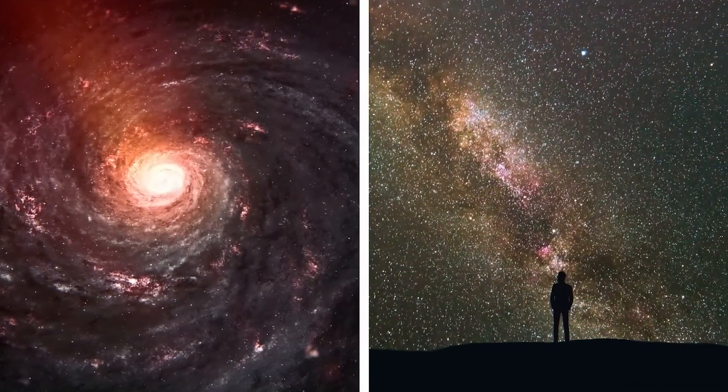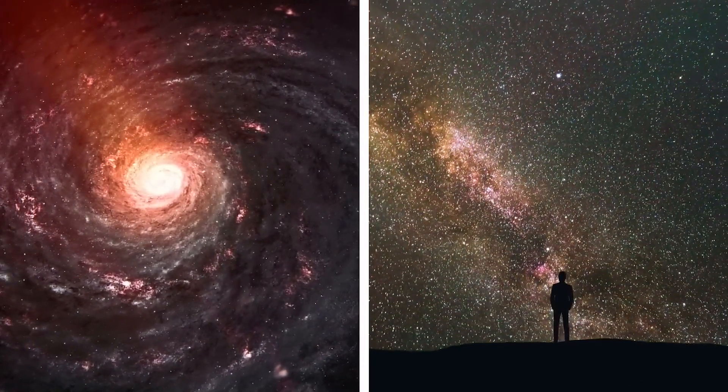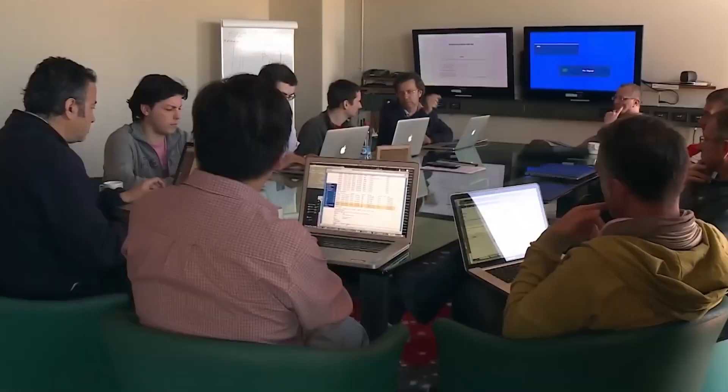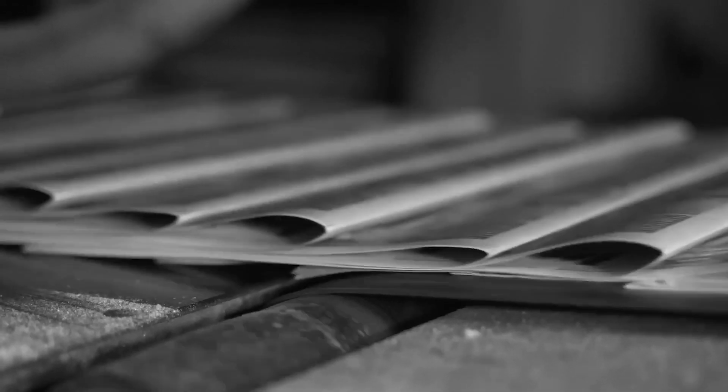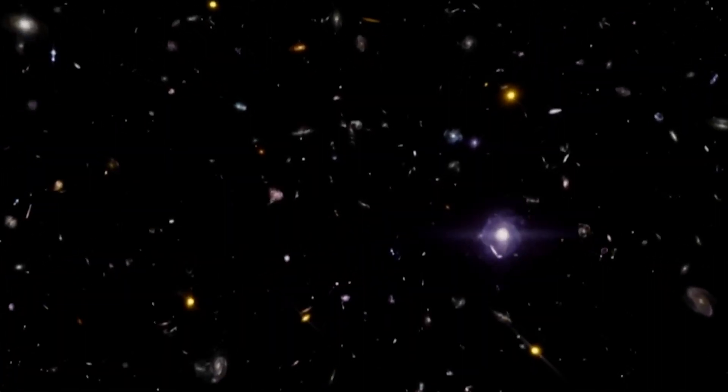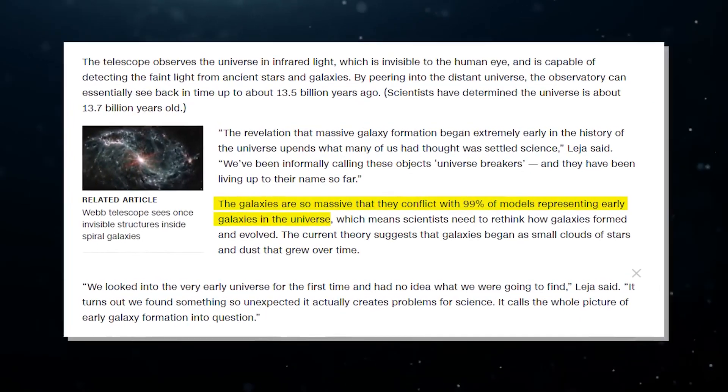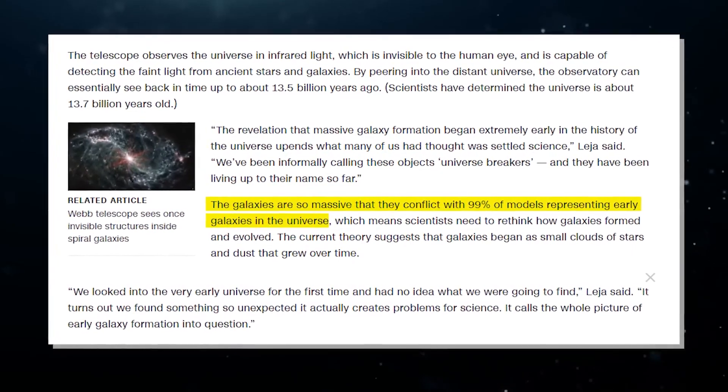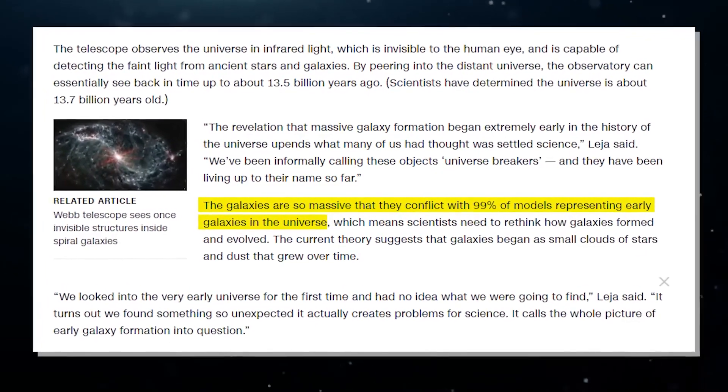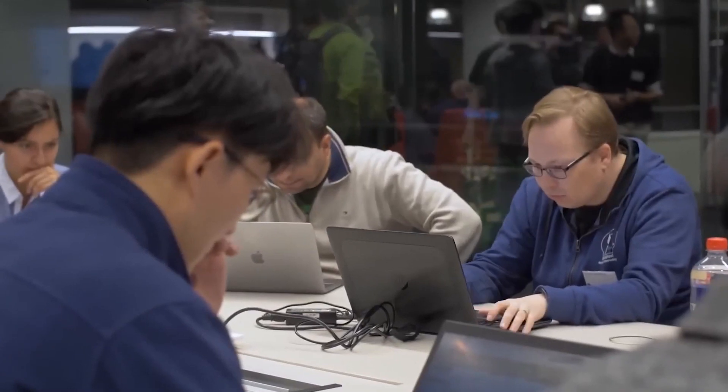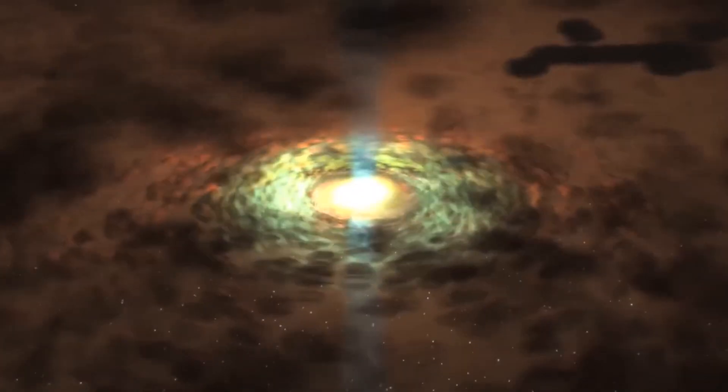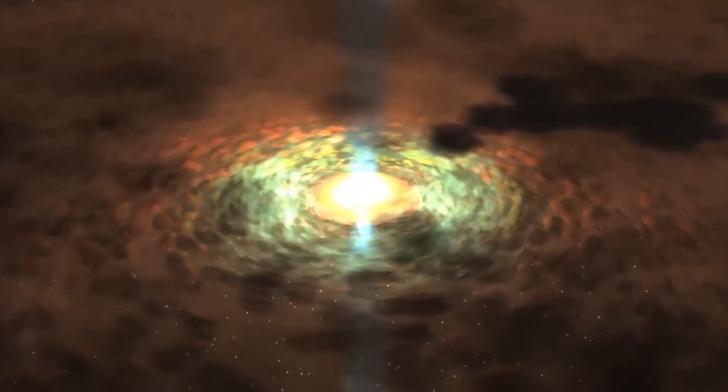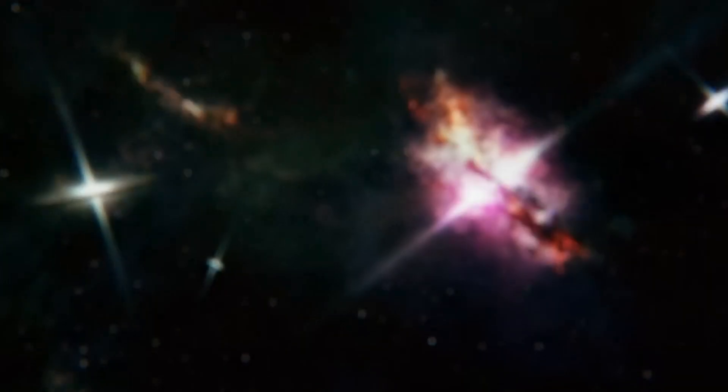This means that they are comparable in size to our own Milky Way galaxy. According to a recent study published in the journal Nature, these newly discovered galaxies are so large that they contradict 99% of the representative models for early galaxies in the universe. This has left scientists utterly perplexed. The current theory suggests that galaxies begin their formation from small stellar dust clouds and gradually grow over time. But new discoveries are proving the opposite.